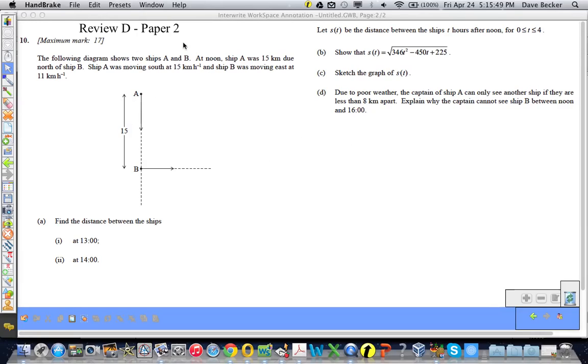Question number 10, and Paper 2 so we can use our calculator. The following diagram shows two ships, A and B. At noon, Ship A was 15 kilometers due north of Ship B. Ship A is moving south at 15 kilometers per hour, and Ship B was moving east at 11 kilometers per hour.